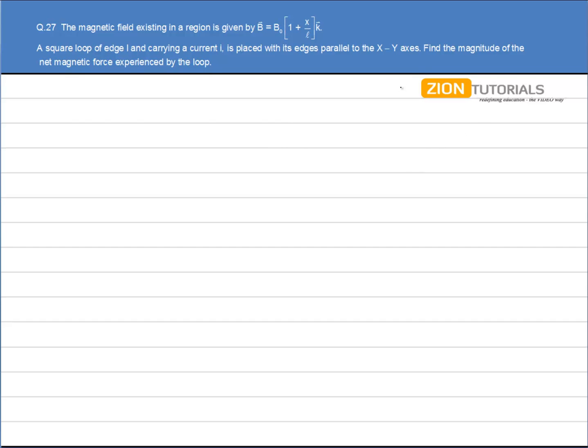Let's say this is my X and Y axis with a square loop. Find A, B, C, and D, and let's say Z is downward. The magnetic field is downward, given by B₀(1 + x/L) k-hat vector. First of all, I have to calculate the net force on the loop.